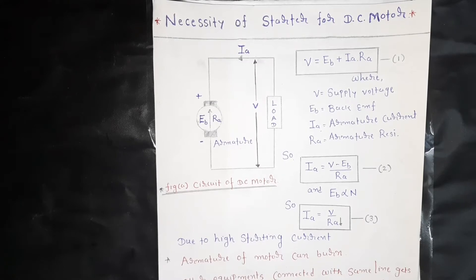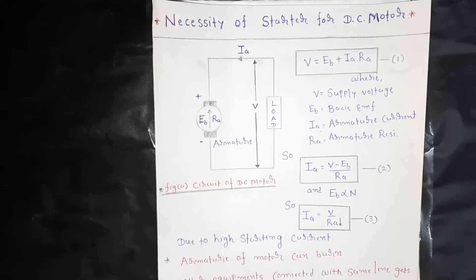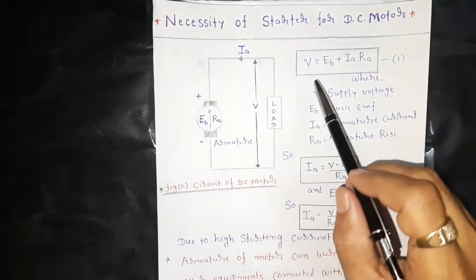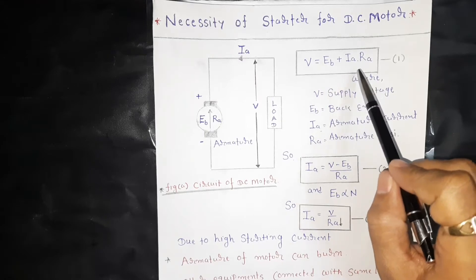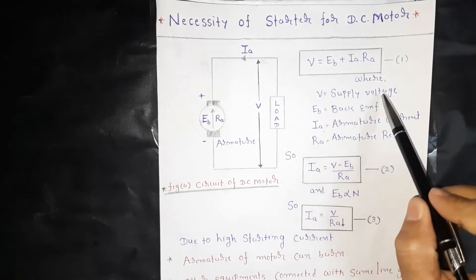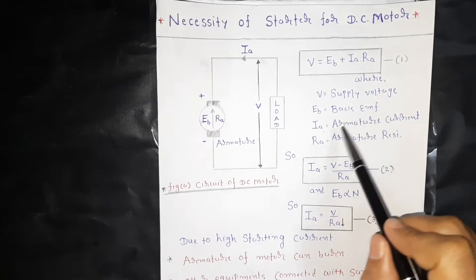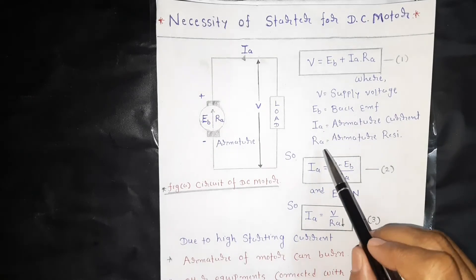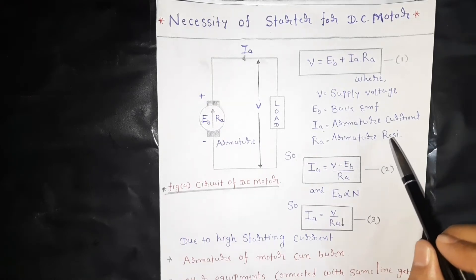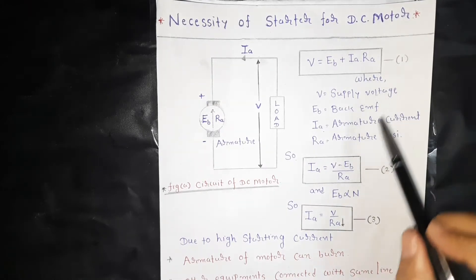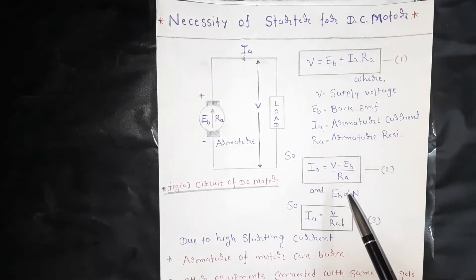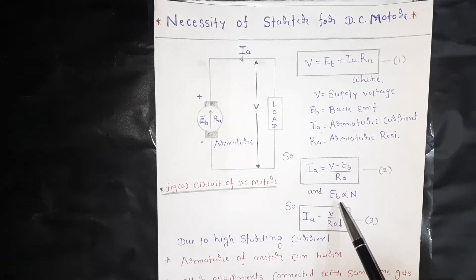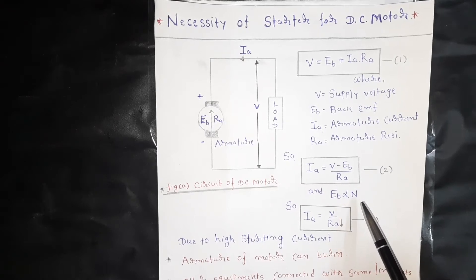First of all, let us discuss what is the necessity of a starter as far as the DC motor is concerned. This is the circuit of the DC motor. The equation of the DC motor is: voltage V equals EB plus IA times RA, where V is the supply voltage, EB is the back EMF, IA is the armature current, and RA is the armature resistance. From this equation, we can write armature current IA equals V minus EB divided by RA. In the DC motor, the back EMF is proportional to the motor speed N.